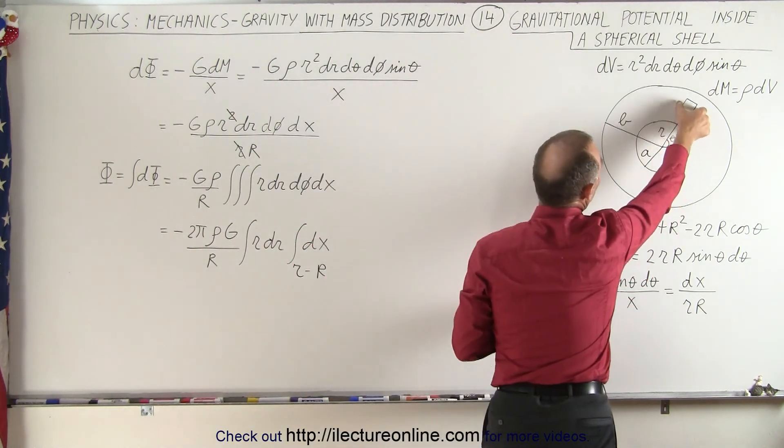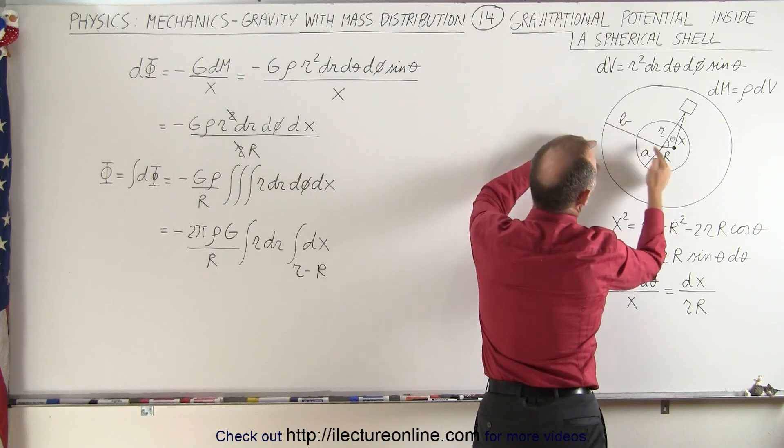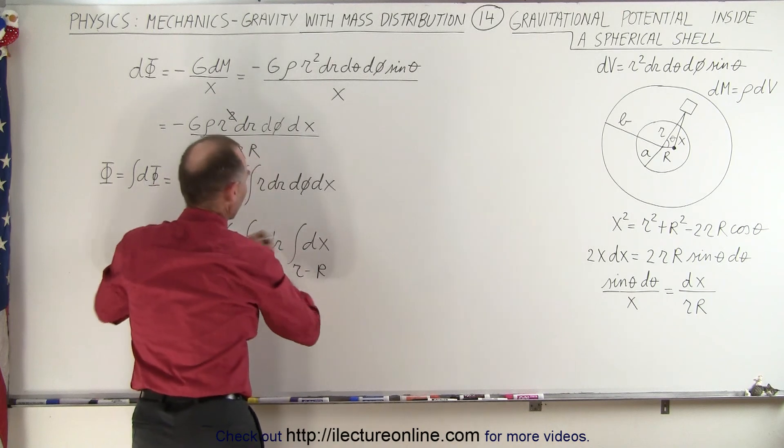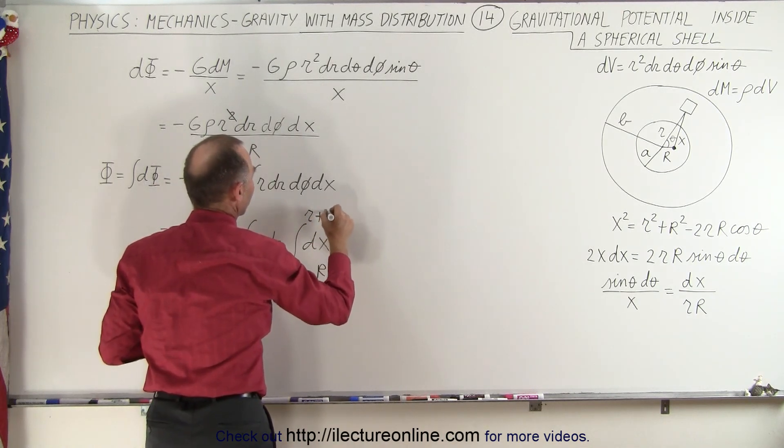The largest that x can be is when this volume element is on the other side, so we take the radius r plus the big R right there as our upper limit. So this would be r plus big R.